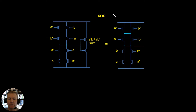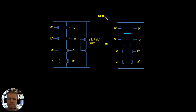The final basic gate we're going to look at is the exclusive OR. We know that we could generate the exclusive OR if we took the exclusive NOR — which is our function — and then put it through an inverter, and this would give us our exclusive OR. You can go ahead and try to build that if you like. That's one realization of an exclusive OR.